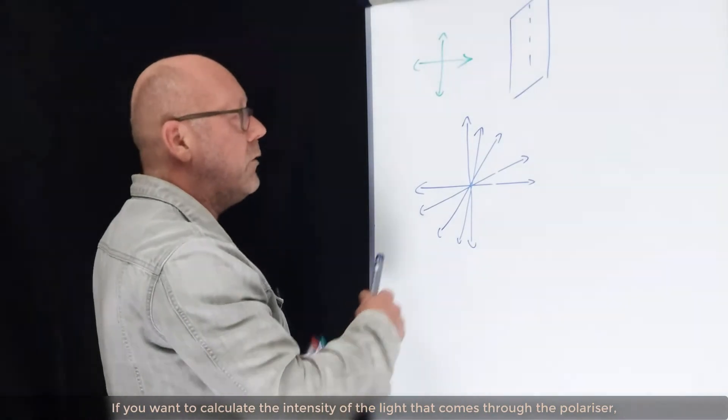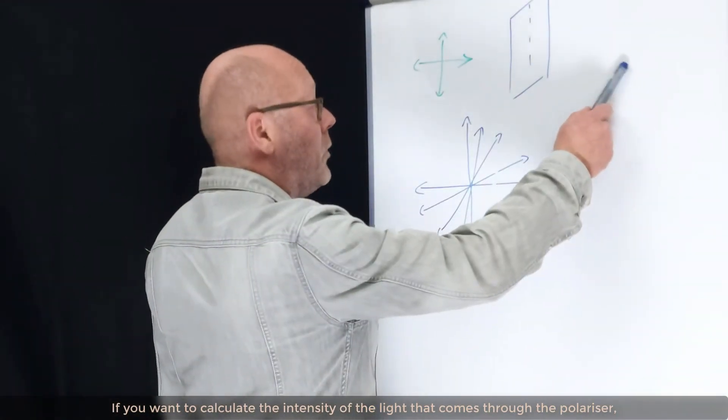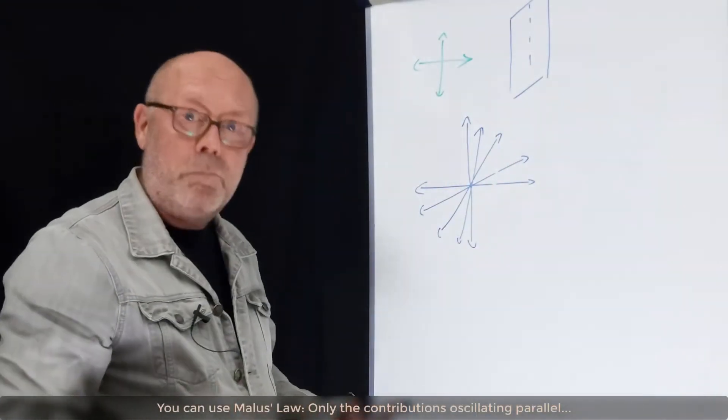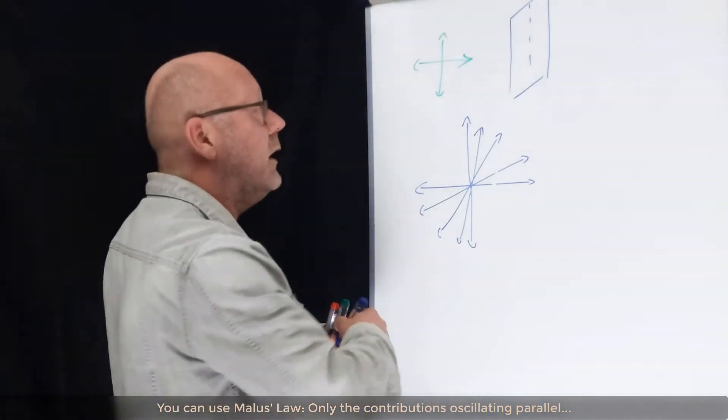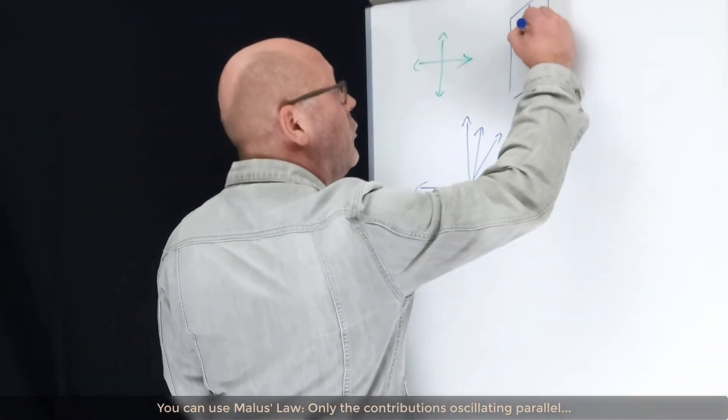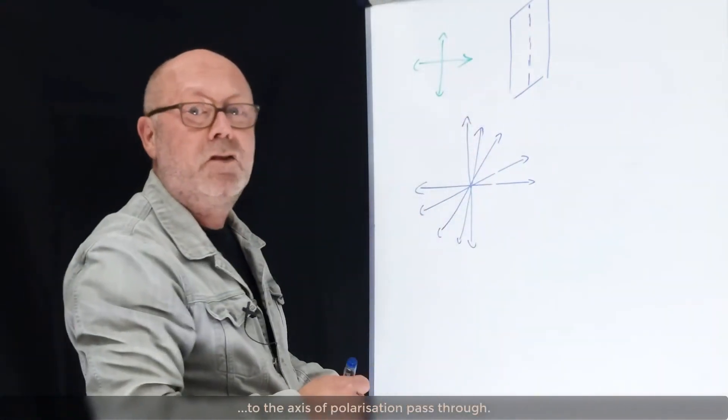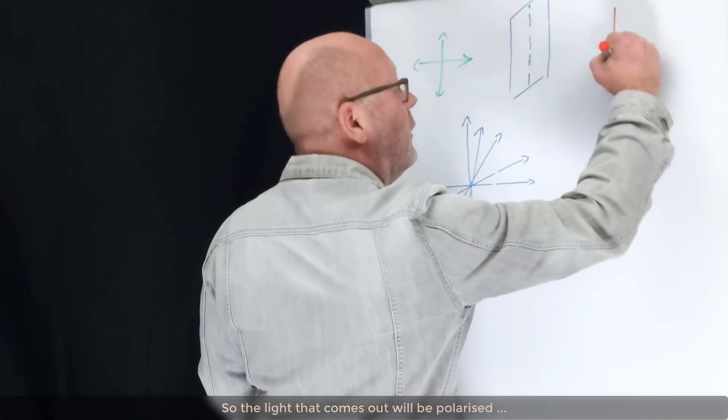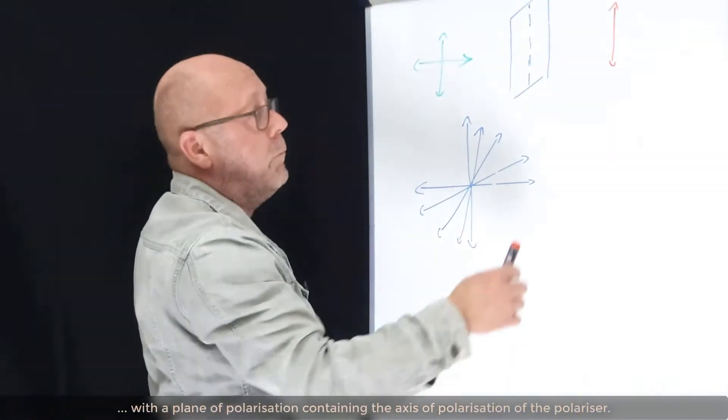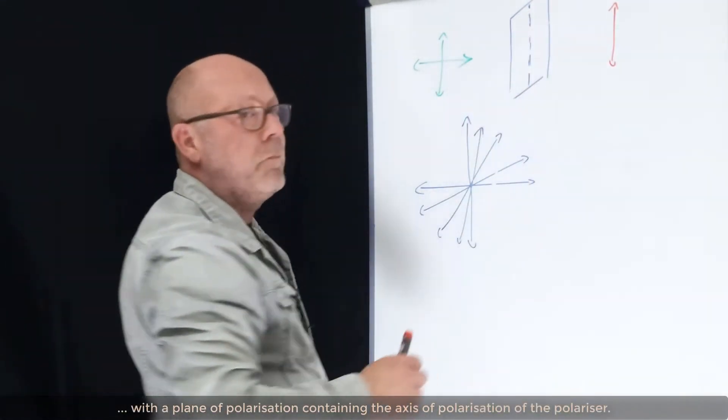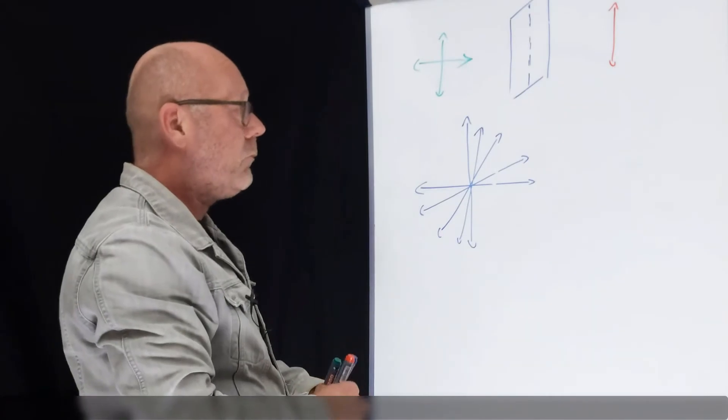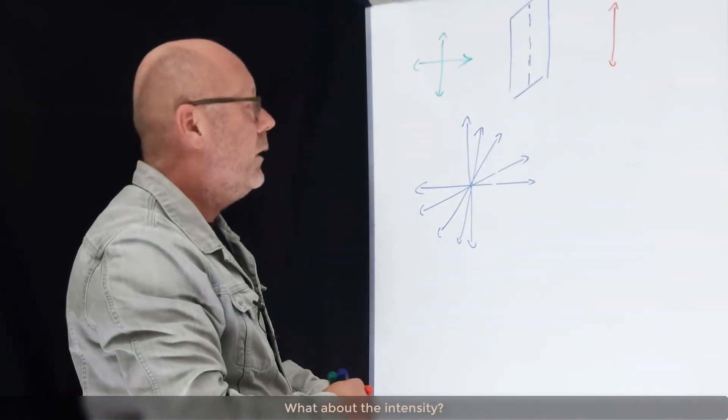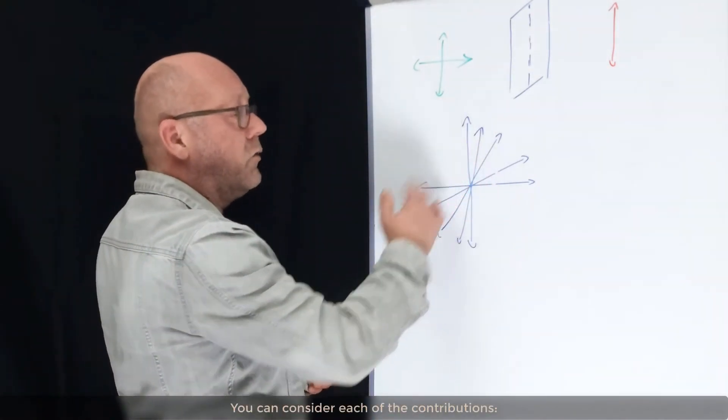So if you want to calculate the intensity of the light that comes through the polarizer, you can use Malus's law. The first thing you realize is that only the contributions which are parallel to the axis of polarization pass through. So the light that comes out will be polarized with a plane of polarization containing the axis of polarization of the polarizer.